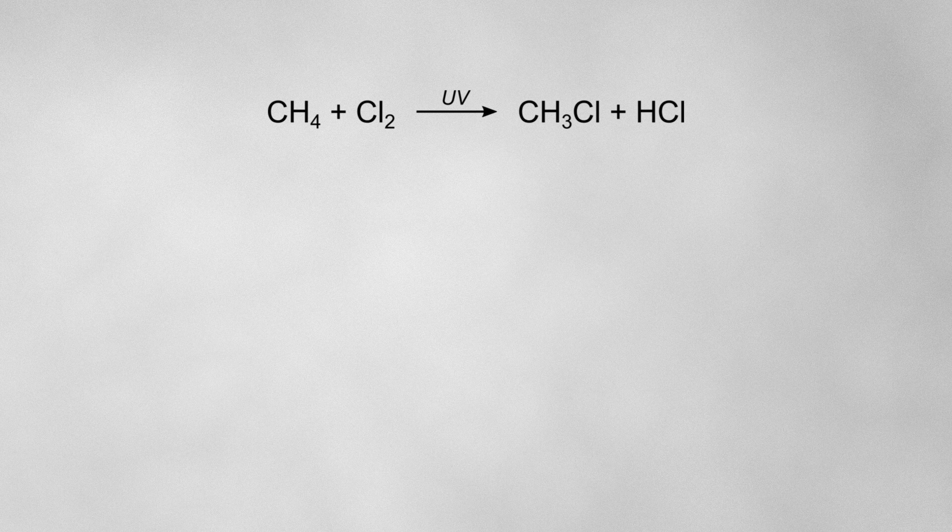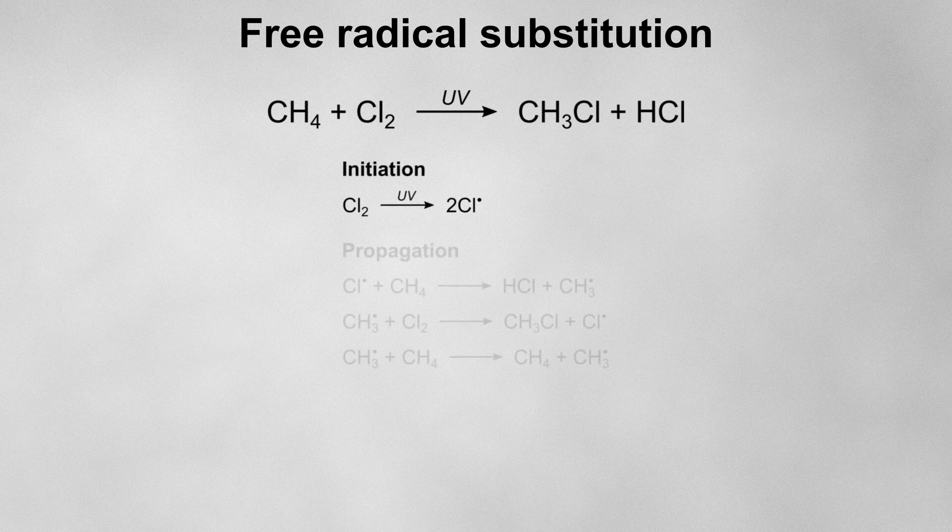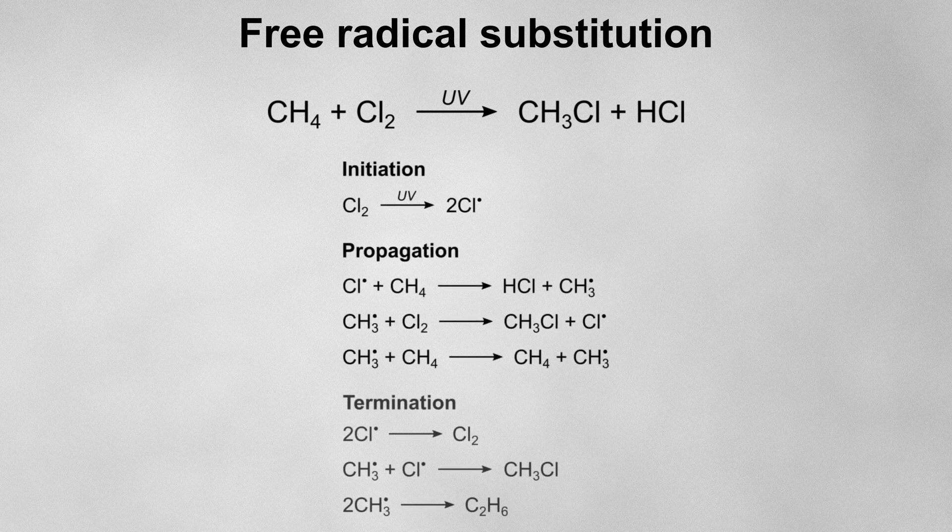If an alkane is reacting with a halogen in the presence of UV light, the mechanism will be free radical substitution. For A-level chemistry, you won't need to draw any curly arrows for this mechanism, you'll just need to be able to outline the initiation, propagation and termination steps involved.